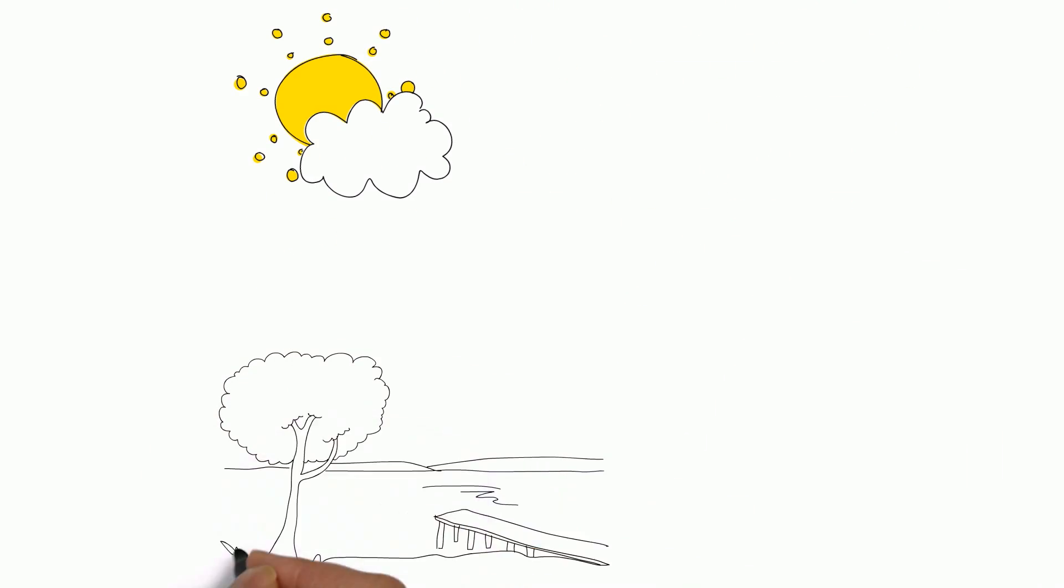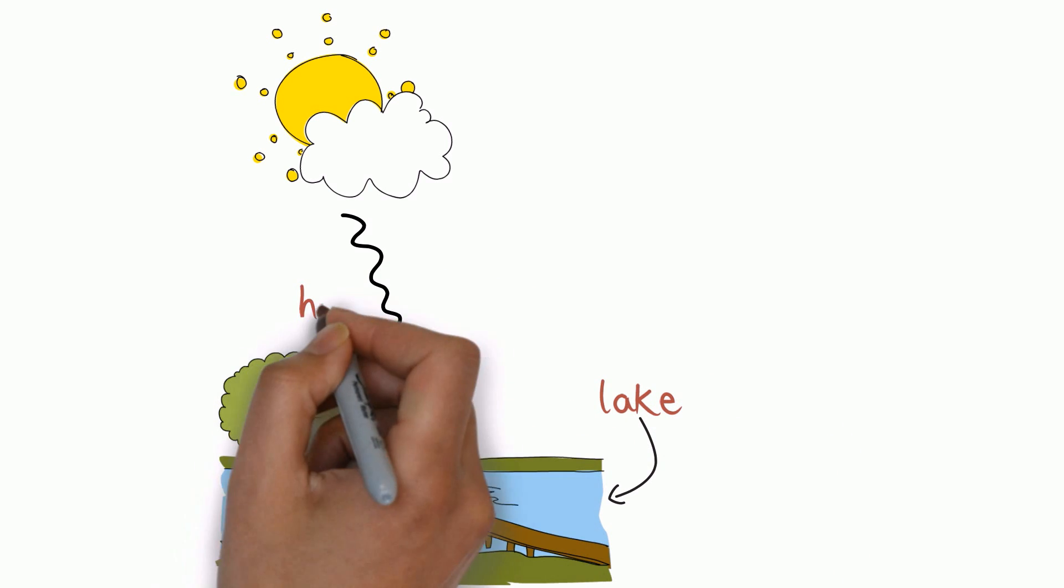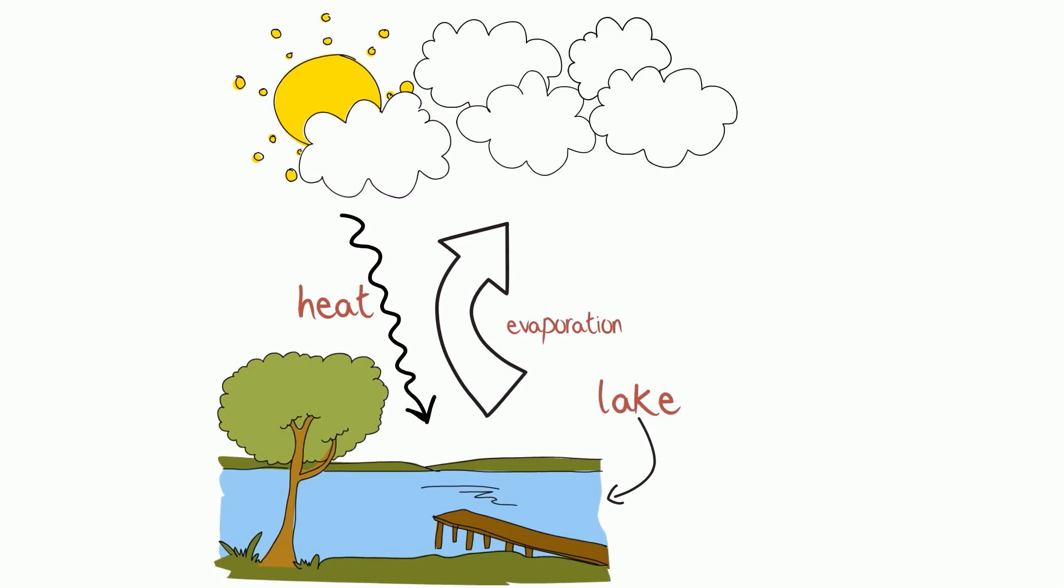Have you ever noticed the water cycle? The sun heats the water from the Earth's surface. The water evaporates into the sky to form clouds. The clouds then drift over to the mountains.